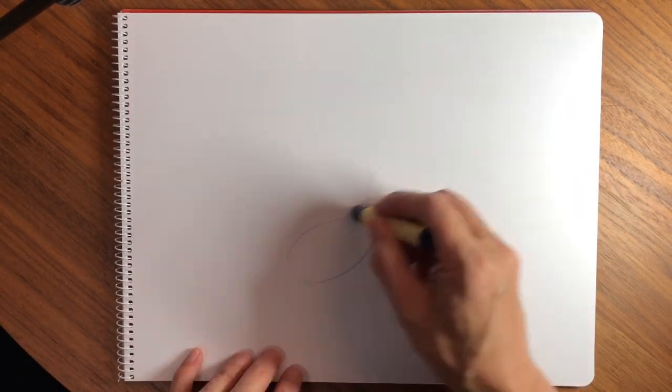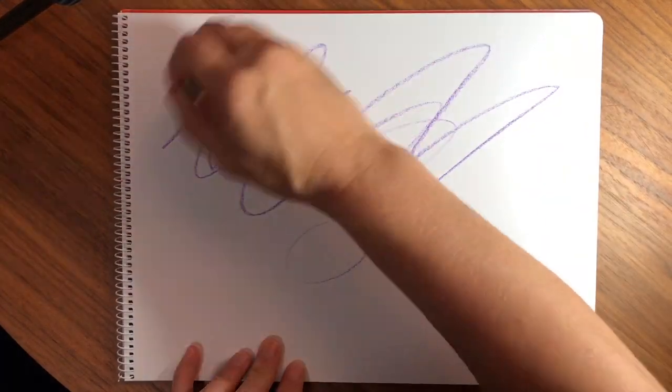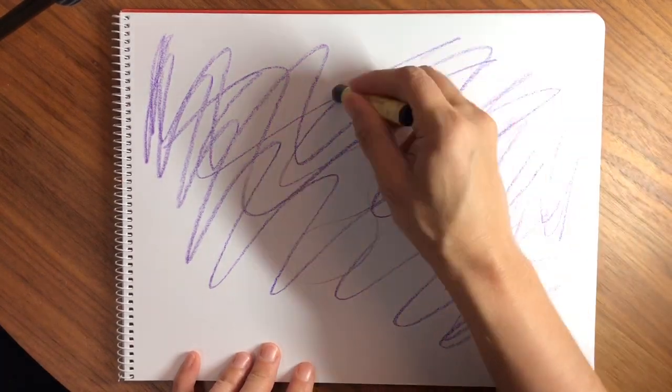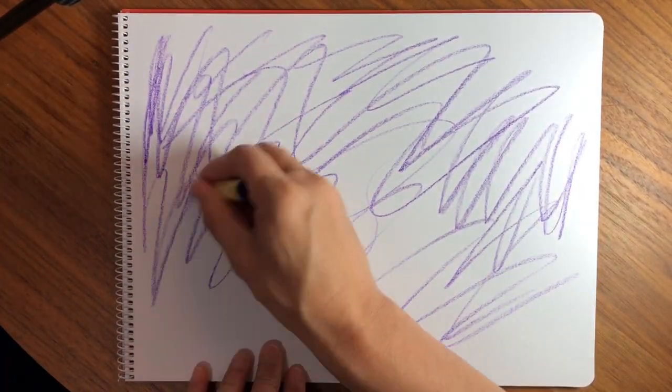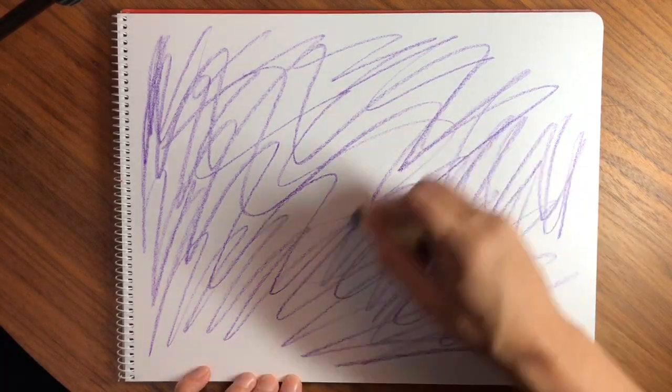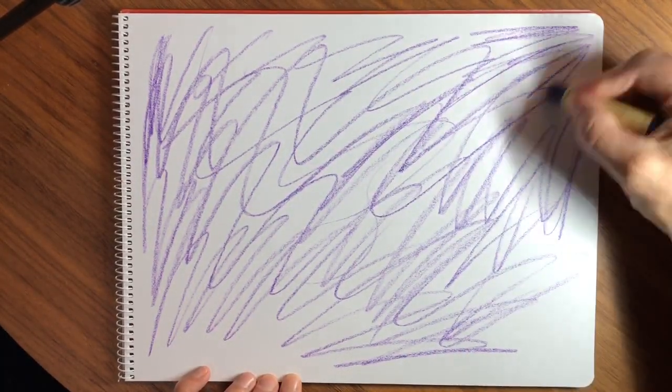So today we are going to do something that all artists need to know how to do, and this is the highest form of art. We are going to learn how to scribble. Now we're not just going to scribble any old thing - we are going to fill the whole entire page with color.